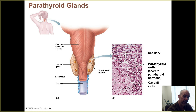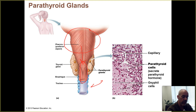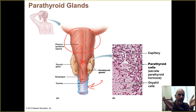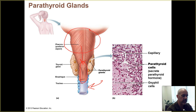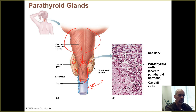What you are looking at here on this diagram is a posterior view. Up here you've got your pharynx, the back of the throat area, leading down into the esophagus. In blue is the trachea, and the thyroid is sitting anterior to the trachea, but its lobes on the left and the right wrap around the trachea and also onto the sides of the esophagus. And right there — four little parathyroid glands connected to the thyroid.